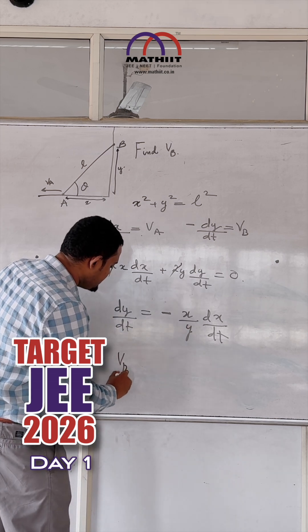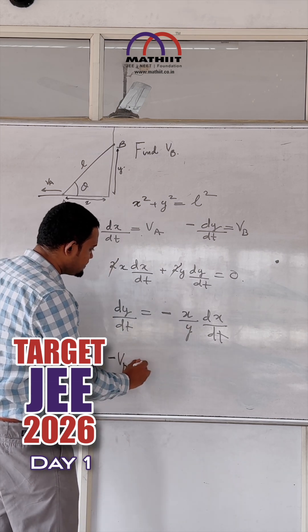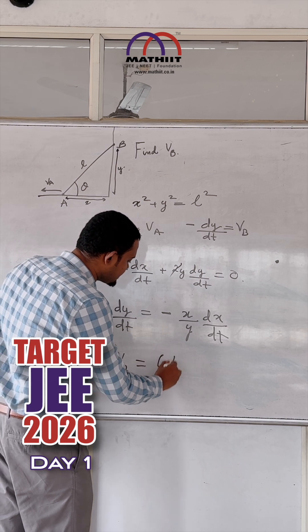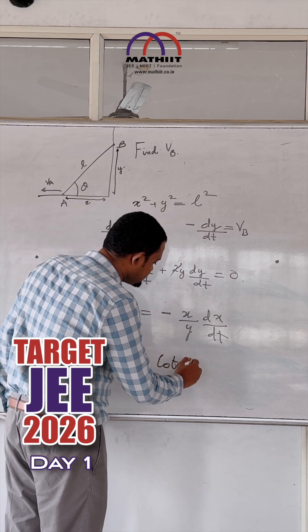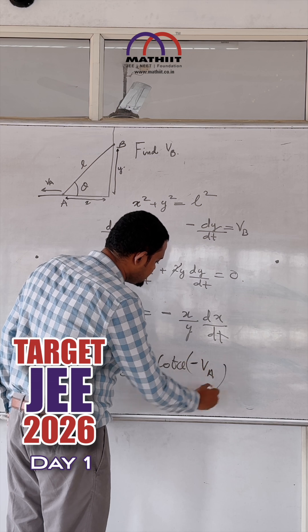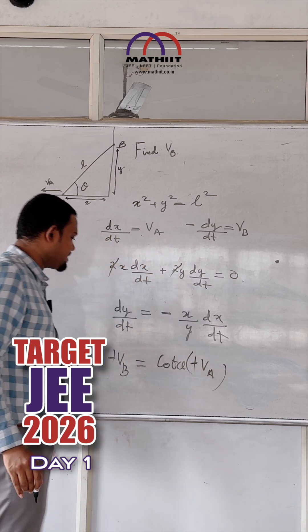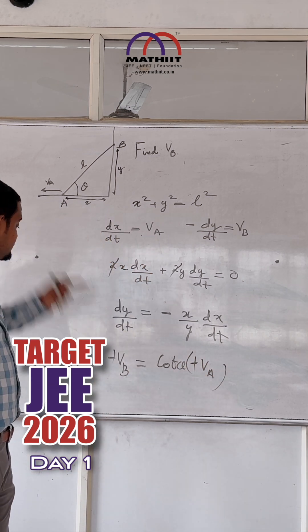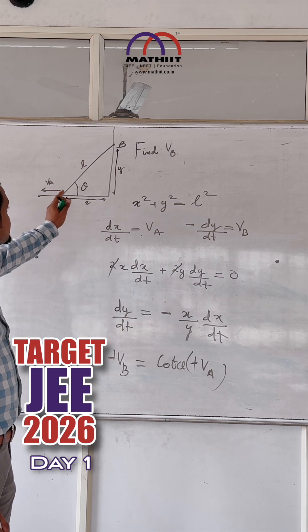Substituting these two values here, we get minus VB is equal to cot theta into minus VA. From here, we get that VB is equal to cot theta times VA.